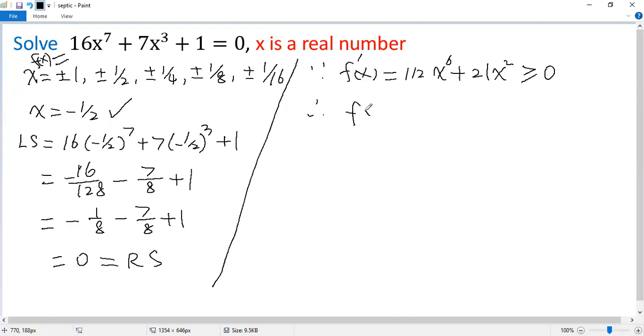So the function of x is an increasing function. We can sketch its graph. If here is negative 1 over 2, then it looks like this one. So there's only one solution.